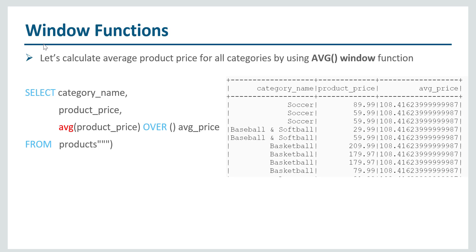This will return an output with category name, product price, and average price for all the products. In this query we haven't used any partition by clause in our over clause, so the window will contain all the records in the table.